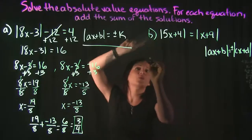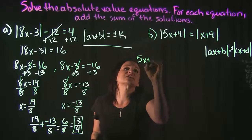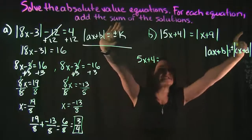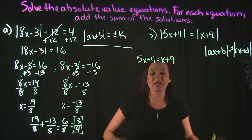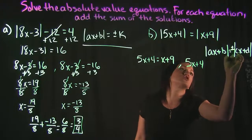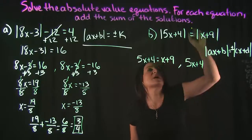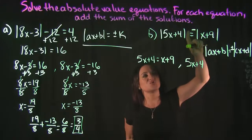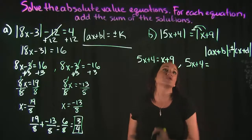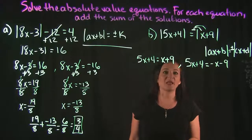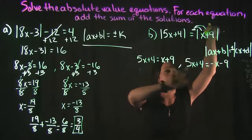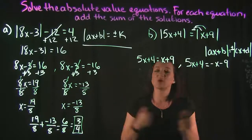So for example B, the first equation takes 5x + 4 set equal to the positive version of the right-hand side exactly as it looks: 5x + 4 = x + 9. The second equation keeps the left side the same, 5x + 4, but sets it equal to the negative of the right-hand side — distributing the negative gives us -(x + 9), which is -x - 9. Those are your two equations for this setup.